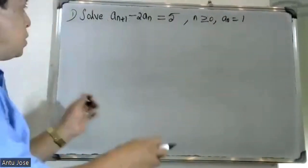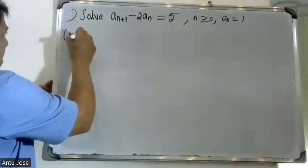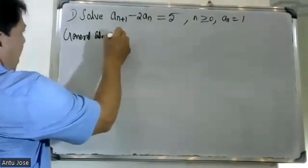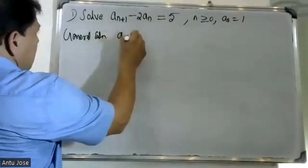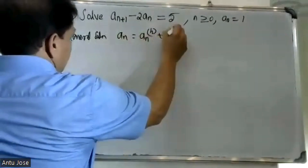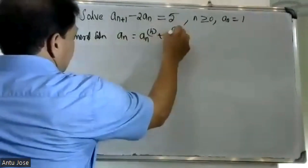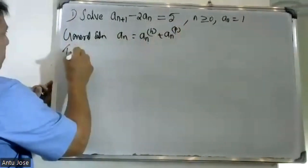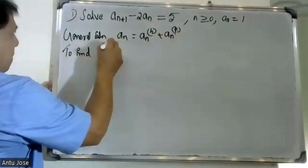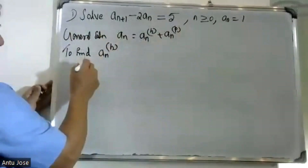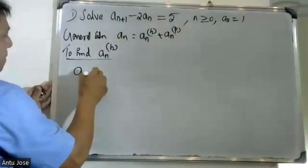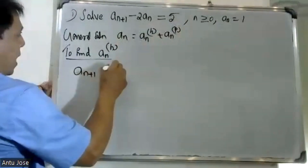For a first-order linear recurrence relation with non-homogeneous part, the solution is of the form a(n) equals a(n)^h plus a(n)^p. We need to find the homogeneous solution a(n)^h from the left-hand side: a(n+1) minus 2a(n) equals 0.